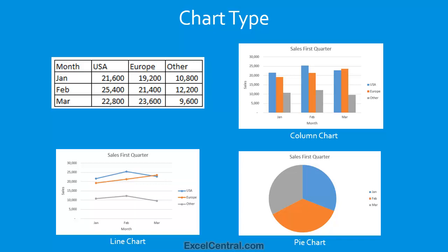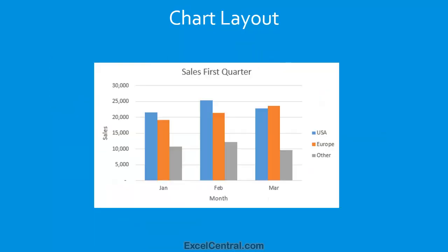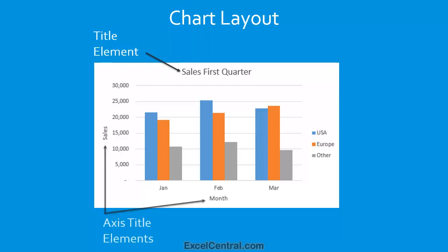So once I'd selected an appropriate Chart Type, it was time to move on to the next stage in the design process and select my Chart Layout. The layout of a chart can be thought of as a list of the elements that a chart contains. Elements are artifacts such as the Title Element, the Axis Title Elements, and the Legend Element.